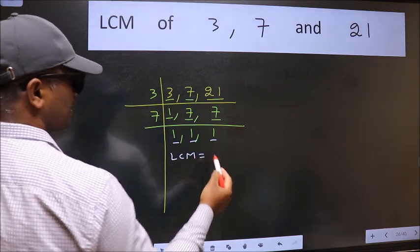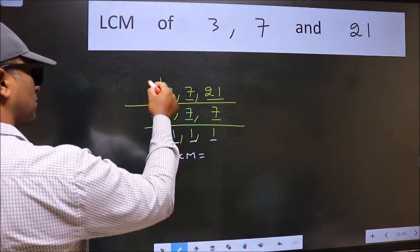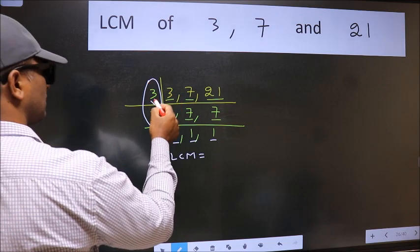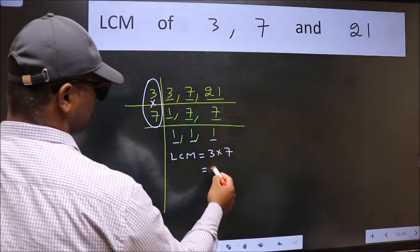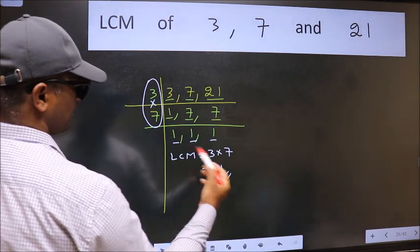So our LCM is the product of these numbers. That is 3 times 7 which is 21, our LCM.